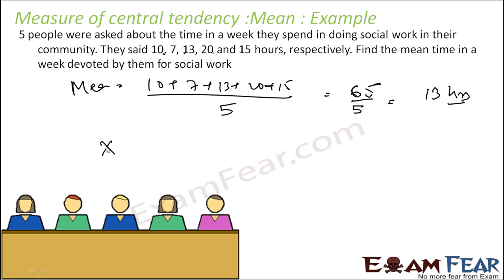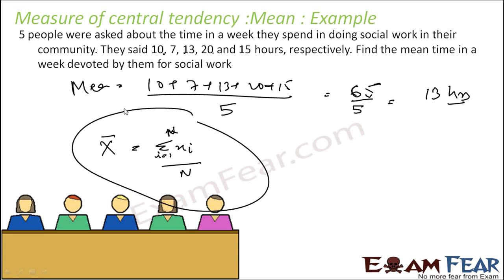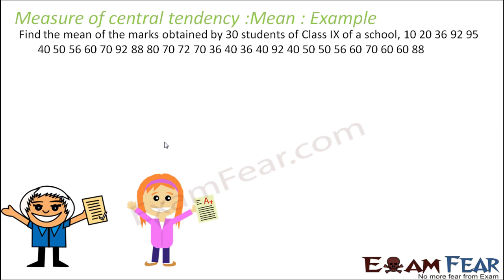Mean is also denoted by x-bar, and it is nothing but Σxi where i is 1 to n, divided by n. This is also the representation of mean. x-bar, that is mean, is Σxi where i is changing from 1 to n, and you divide the whole thing by n. This is the summation sigma.